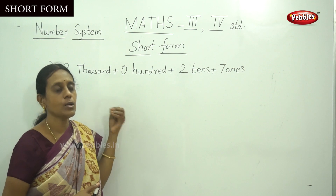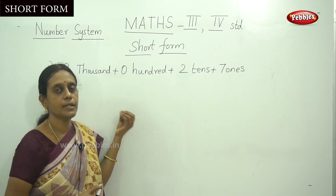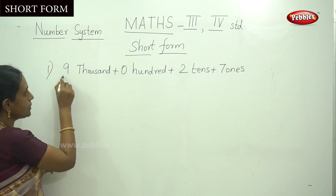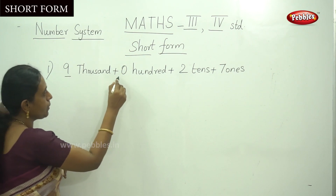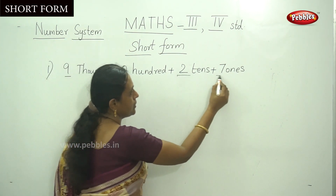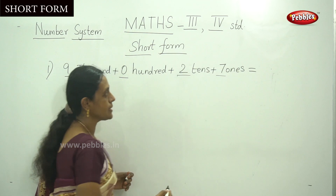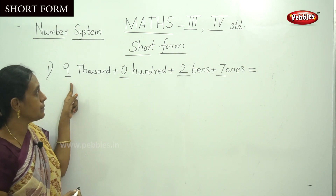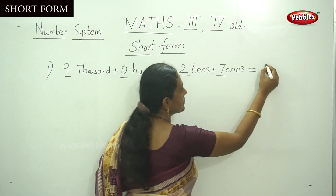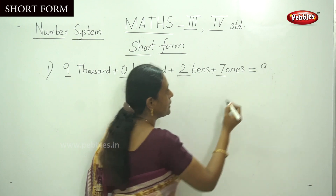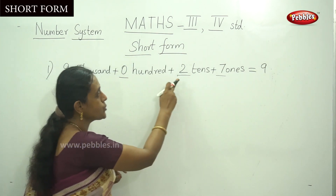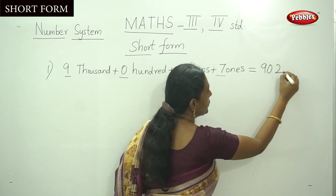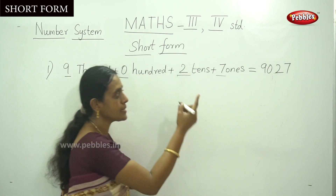In short form, it is a very simple method. You have to write down the answer. First write the thousand place number, that is nine, and next that is zero, and two, and seven. So zero, two, seven. This is the answer.